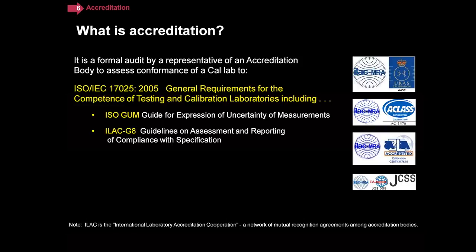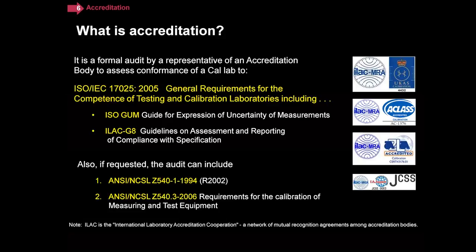We talked about most of these in module five. The standard that is always included in an accreditation is ISO 17025, and you can see just from the title why that would be the case — it's the competence of testing and calibration laboratories. Part of 17025 covers how you use the ISO GUM for measurement uncertainty and whether you're observing the guidelines on assessment reporting via G8. If a lab chooses to, they can also be accredited to Z540-1 or the newer replacement Z540.3.